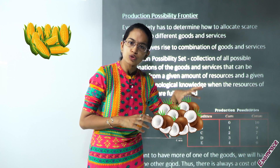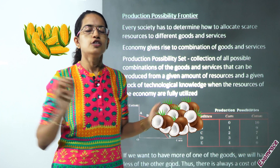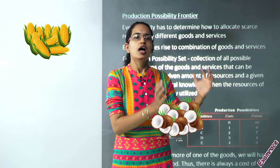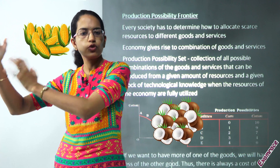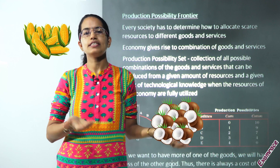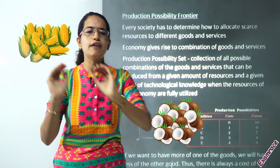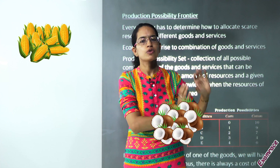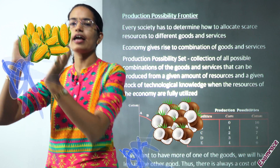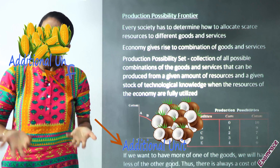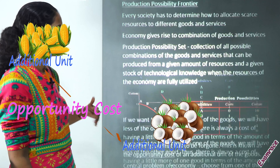To produce one thing I would have to forgo another. To produce extra coconut I would have to forgo an amount of corn, and to produce an extra unit of corn I would have to forgo a unit of coconut production. That additional unit I am forgoing is my opportunity cost, which is understood in line with the production possibility curve.